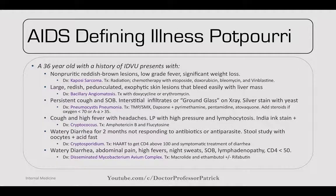Some AIDS-defining illnesses: a 36-year-old with a history of IV drug use has non-pruritic reddish-brown lesions, low-grade fever, and significant weight loss — this can signify Kaposi's sarcoma. Treat with radiation and chemotherapy using etoposide, doxorubicin, bleomycin, and vinblastine. If there are large reddish pedunculated exophytic skin lesions that bleed easily and a liver mass, think of bacillary angiomatosis. Treat with doxycycline or erythromycin.